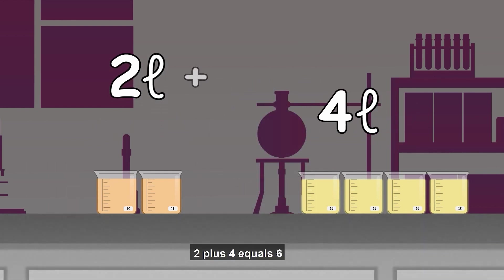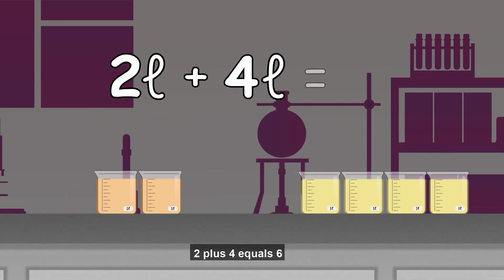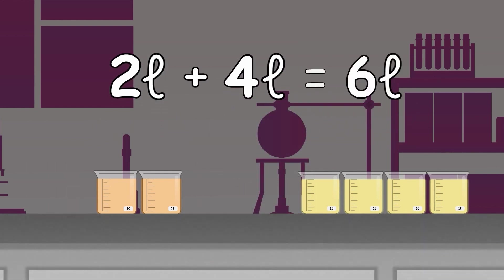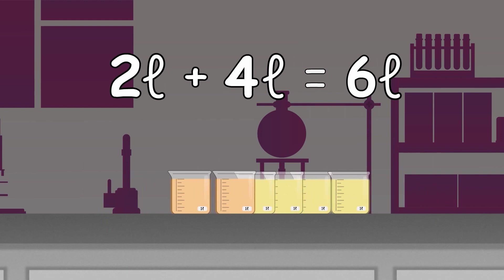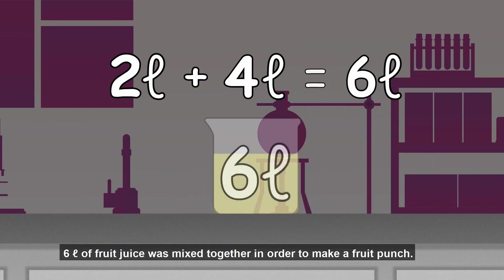2 plus 4 equals 6. 6 liters of fruit juice was mixed together in order to make a fruit punch.